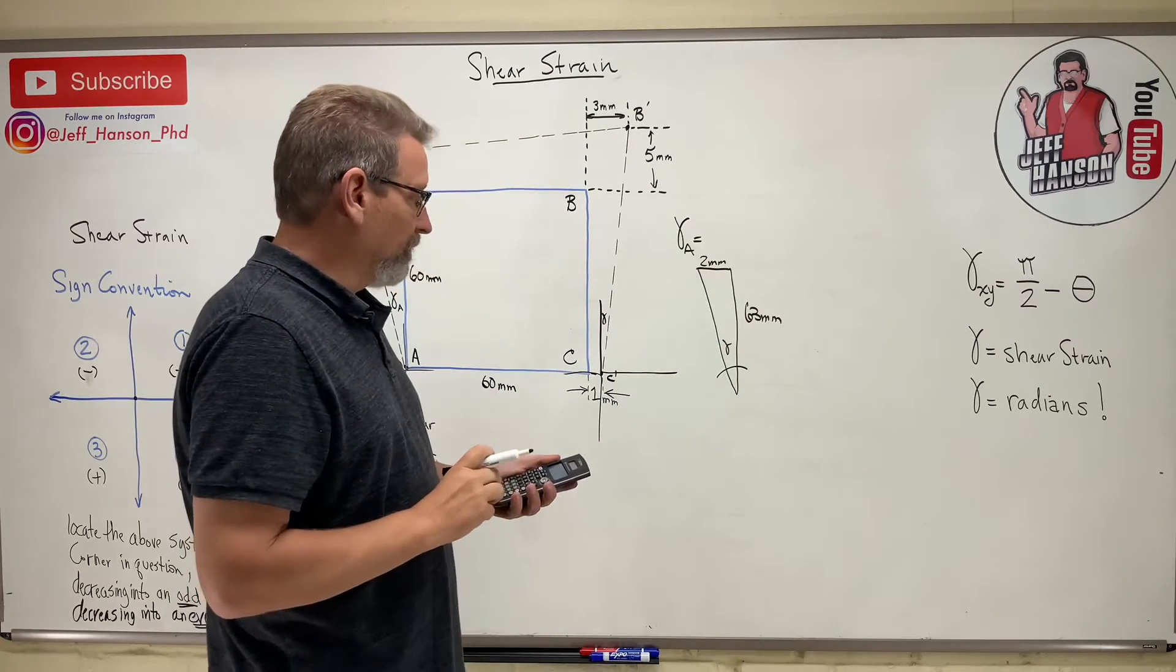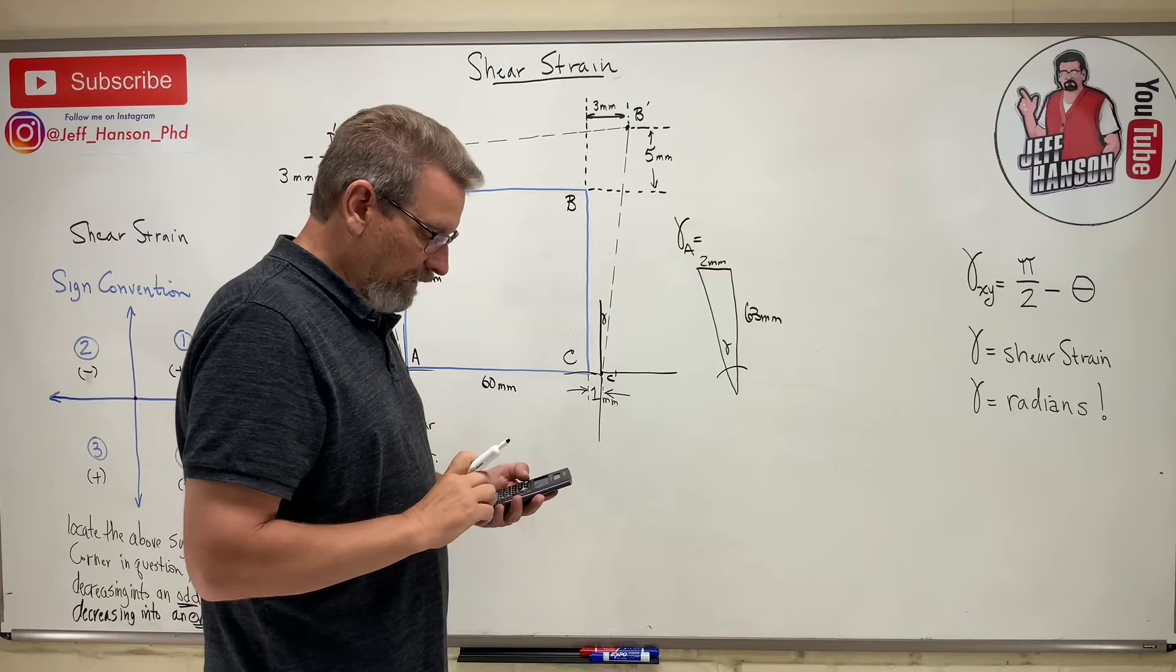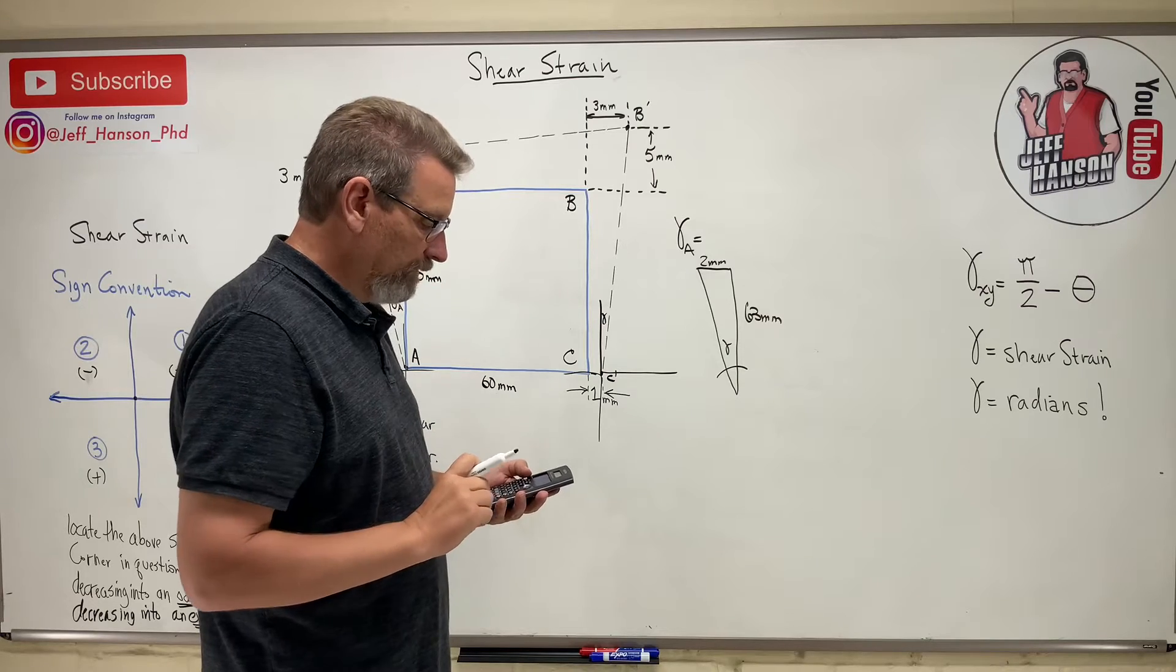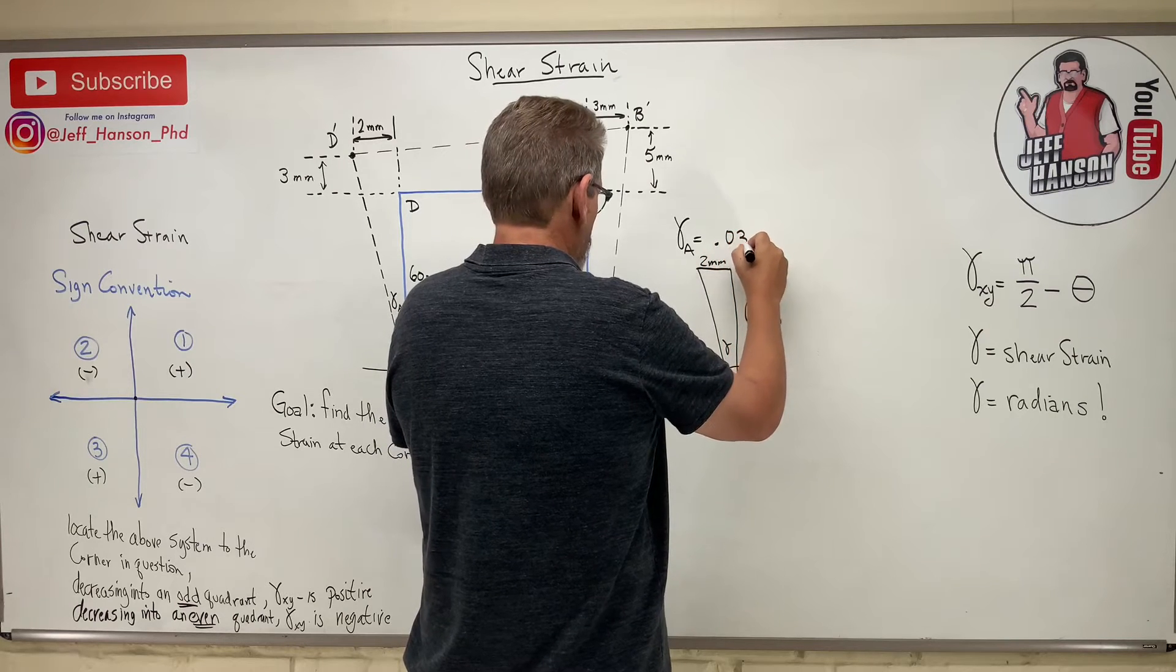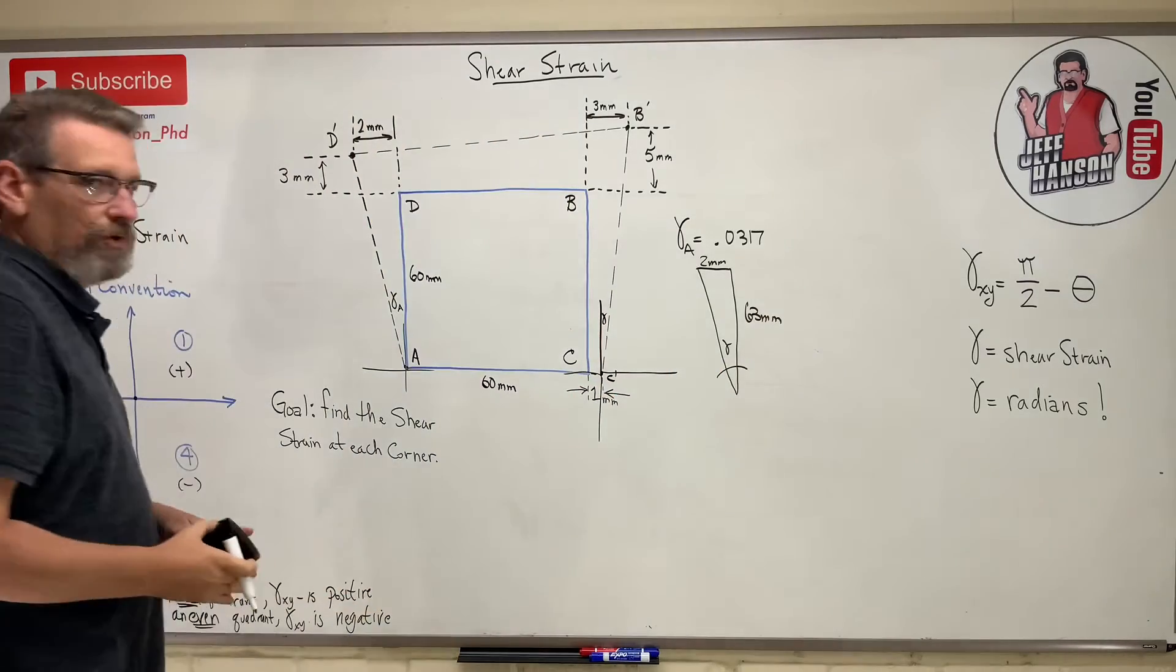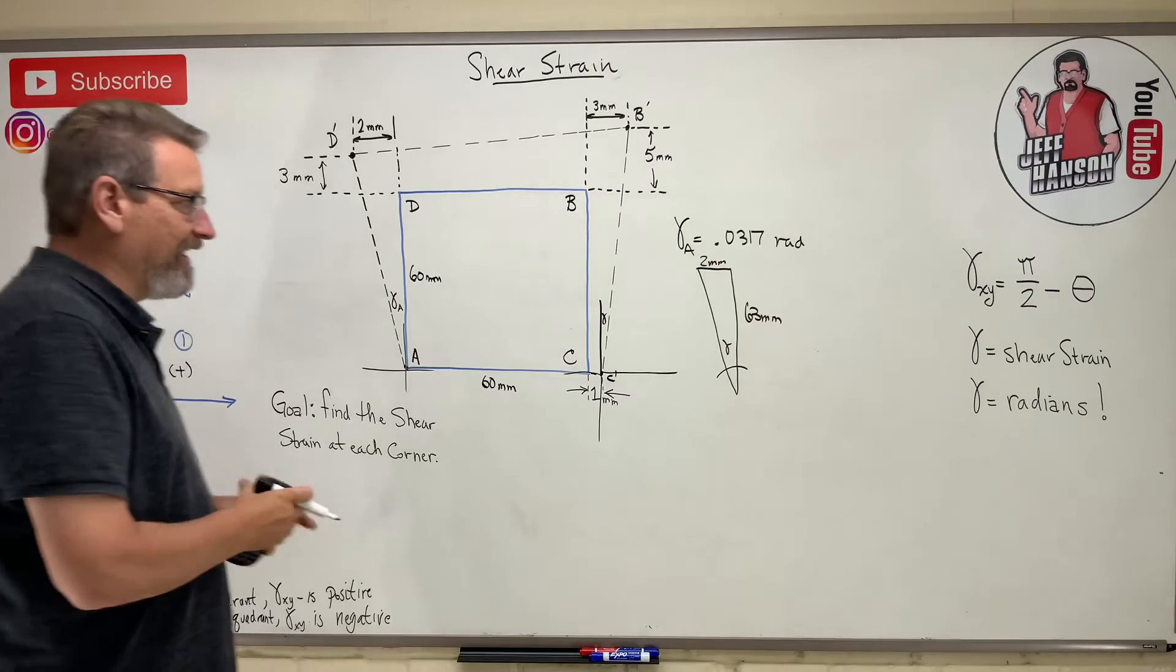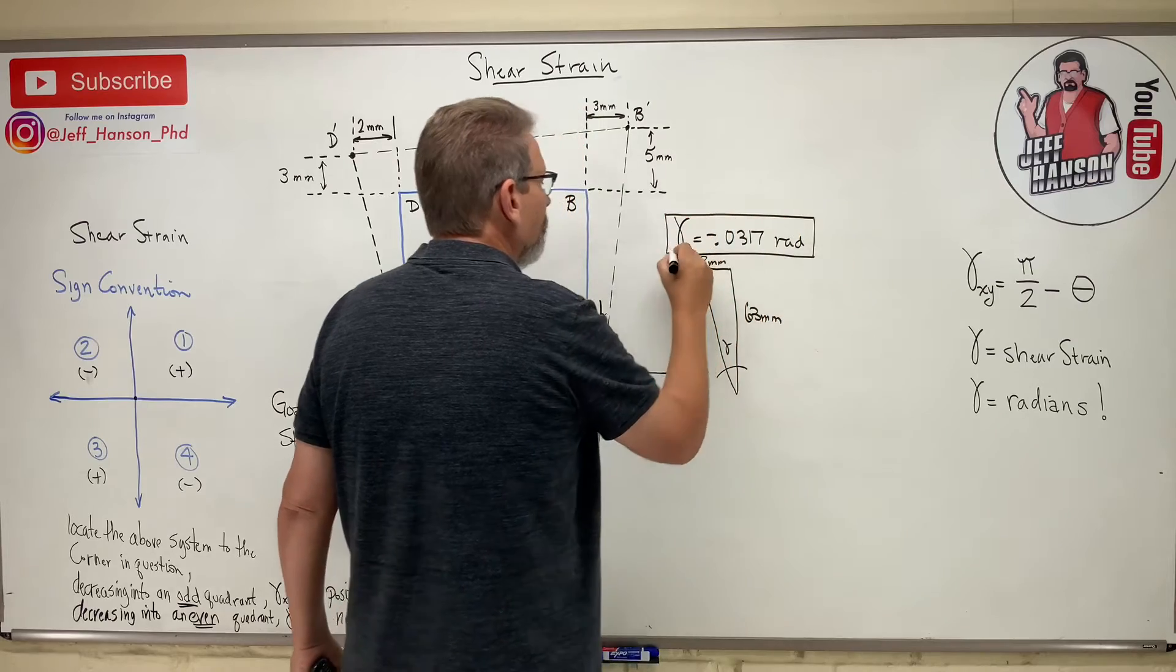So how about 2 divided by 63, enter, inverse tan, whoa, clear. And inverse tan of that equals, and this is in radians, 0.0317. Radians, there's no units on that. You can put rads out there if you want to, rad man. And is that going to be positive or negative? It's in an even quadrant, it is negative. So there's one.